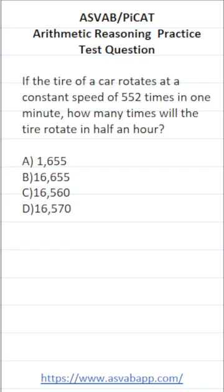This arithmetic reasoning practice test question for the ASVAB and PiCAT says, if the tire of a car rotates at a constant speed of 552 times in one minute, how many times will the tire rotate in half an hour?